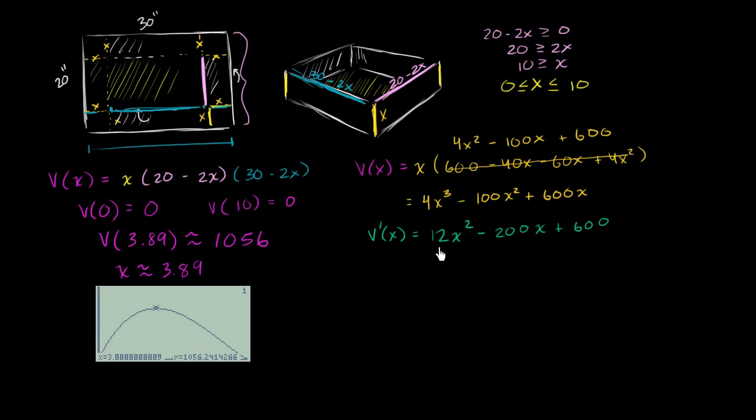And so now we just have to figure out when this is equal to 0. So we have to figure out when 12x squared minus 200x plus 600 is equal to 0. What x values get my derivative to be equal to 0? When is my slope equal to 0? I could also look for critical points where the derivative is undefined, but this derivative is defined, especially throughout my domain of x that I care about between 0 and 10. So I'm just going to cut to the chase and try to use the quadratic formula here.